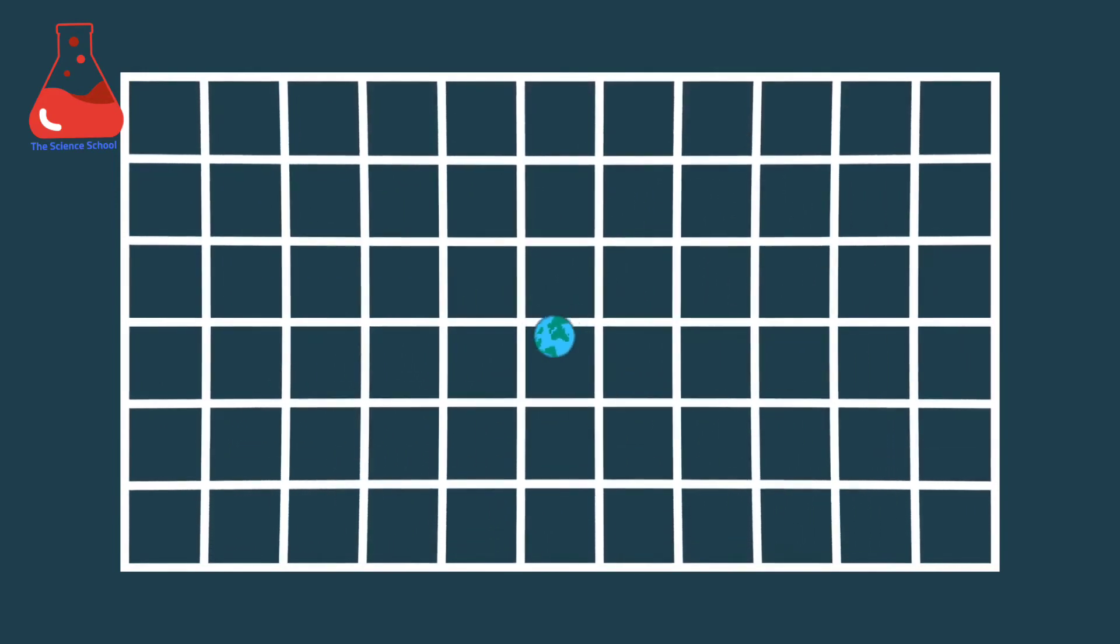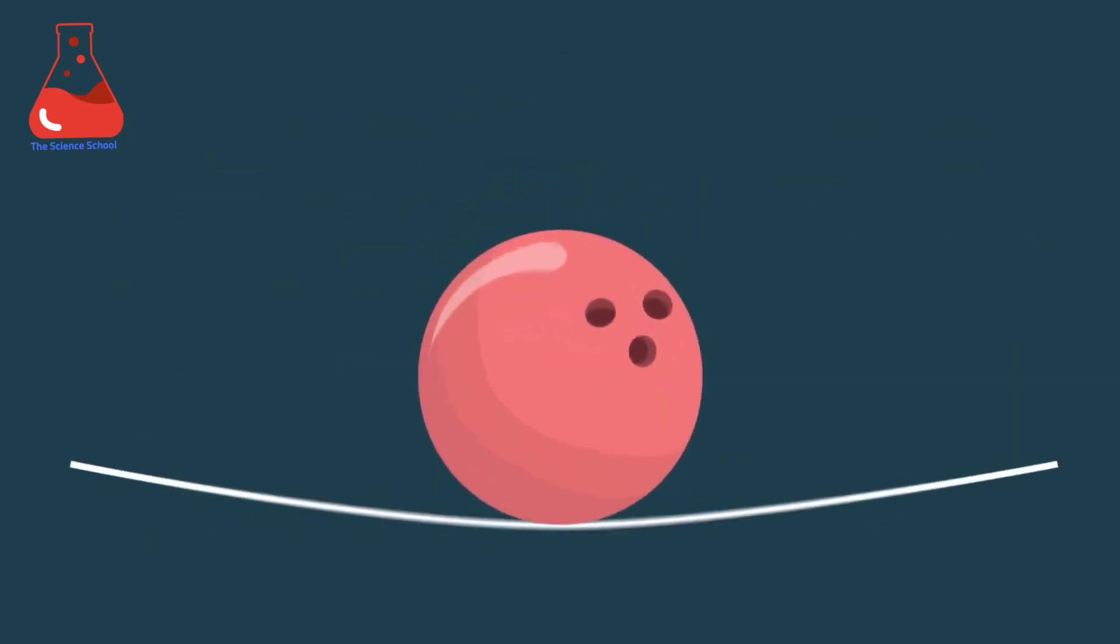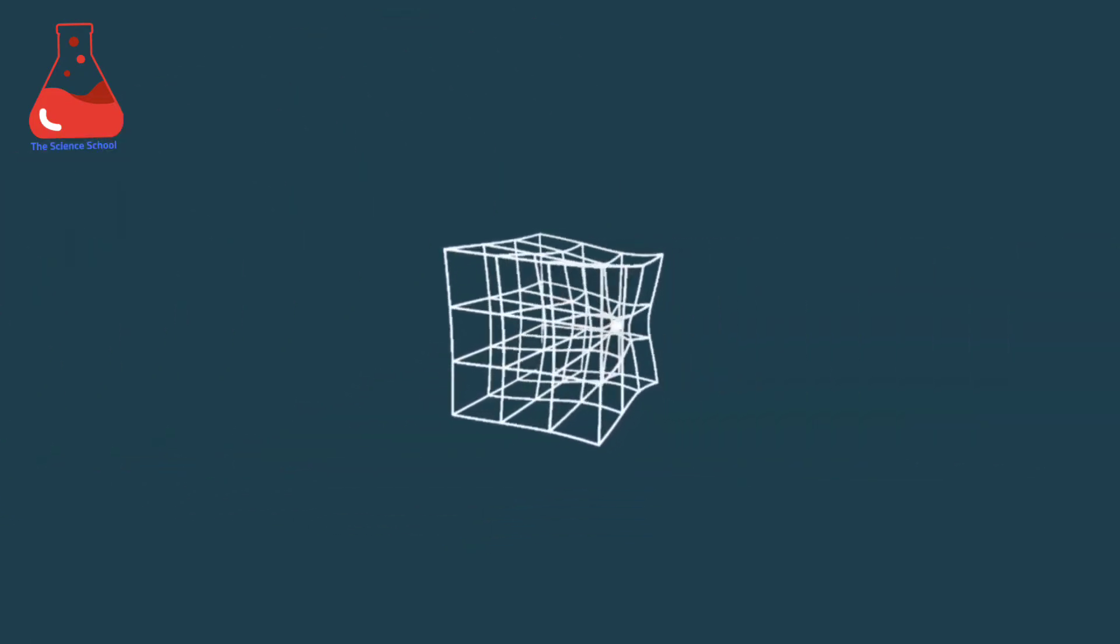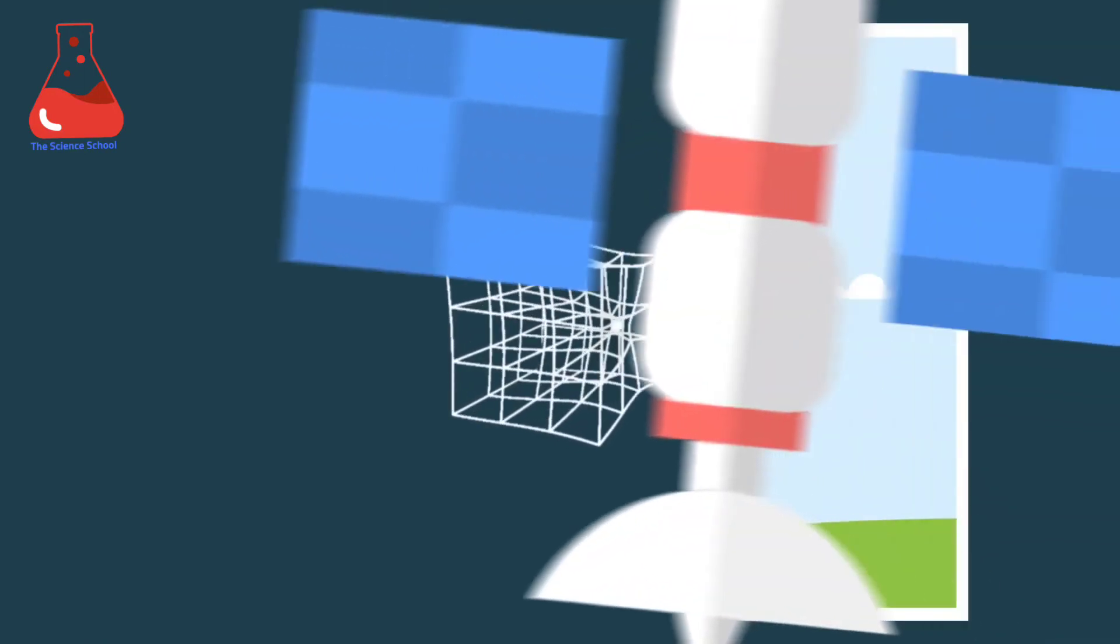Like a bowling ball warps the surface of a trampoline. In 3D space it would look like this. Do you see how space is curved through masses? Now let's get back to Newton's apple.